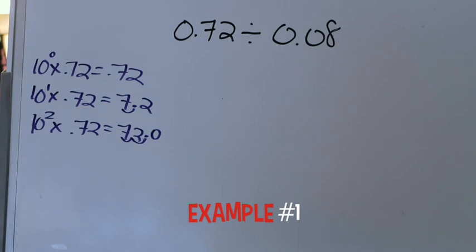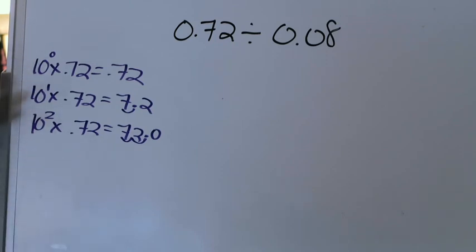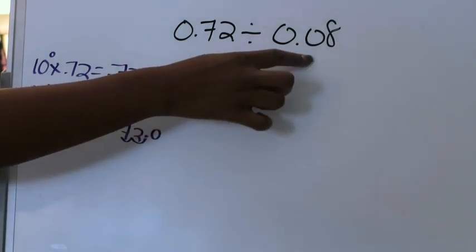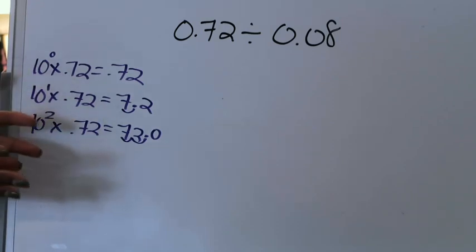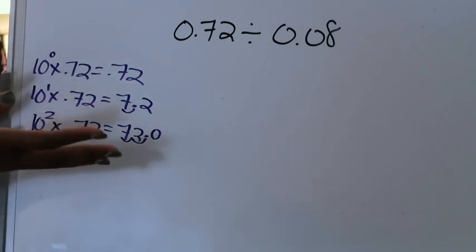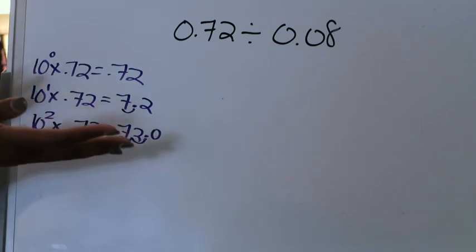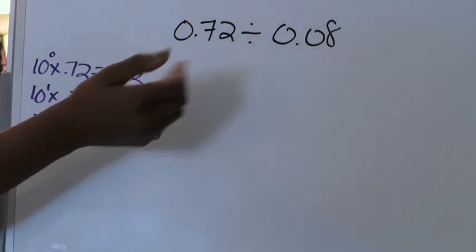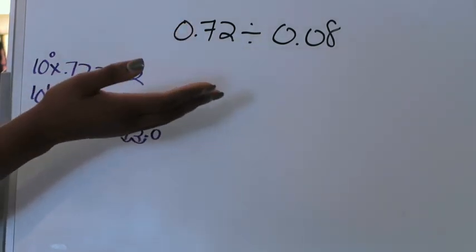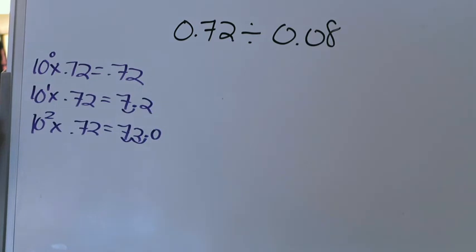What you need to do when you're dividing a decimal by a decimal is that if you multiply both your dividend and your divisor by the same power of 10, you will end up with the exact same answer that you would have gotten had you decided to just divide it as the problem is written — not using your powers of 10 to move a decimal point.